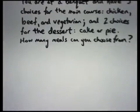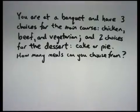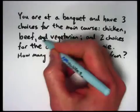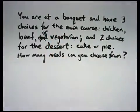We will start with the problem here. You are at a banquet and have three choices for the main course: chicken, beef, and vegetarian, and two choices for the dessert: cake or pie. Well, I guess I should have said 'or' here instead of 'and' for the first thing. How many meals can you choose from? Typical kind of problem you might encounter with some pretty small numbers here. I chose small numbers on purpose.